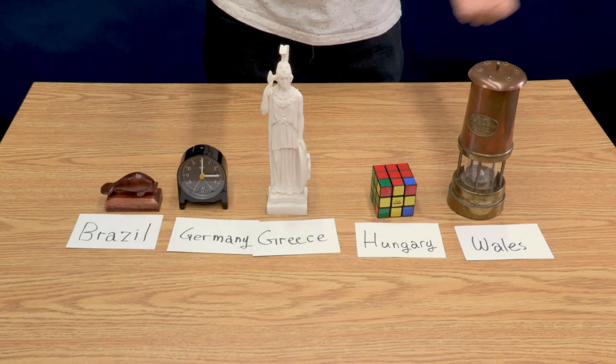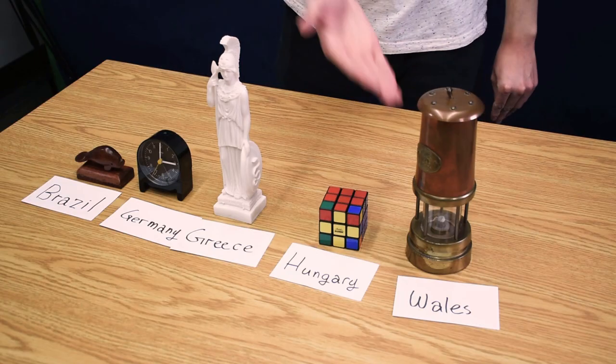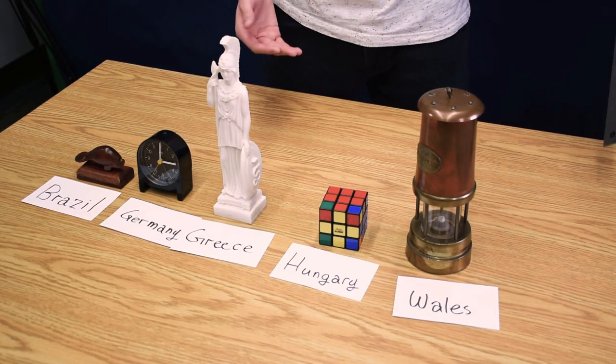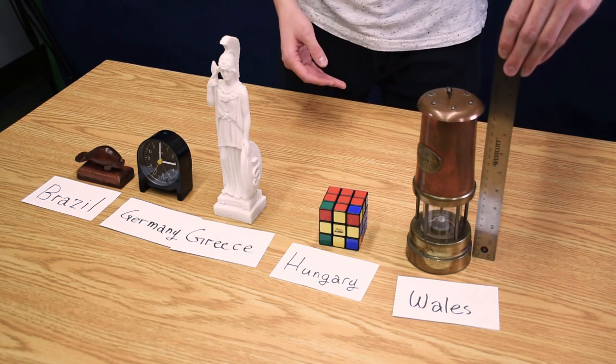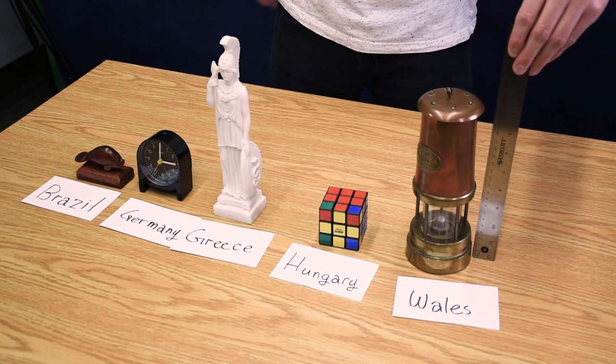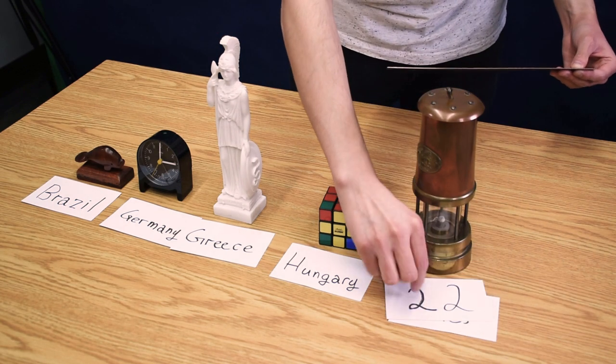My key function will be to measure the height of the trinket. So, let's take this lamp and measure its height. I'm going to say that that's about 22 centimeters. So, I'll map the lamp to its height, 22 centimeters.